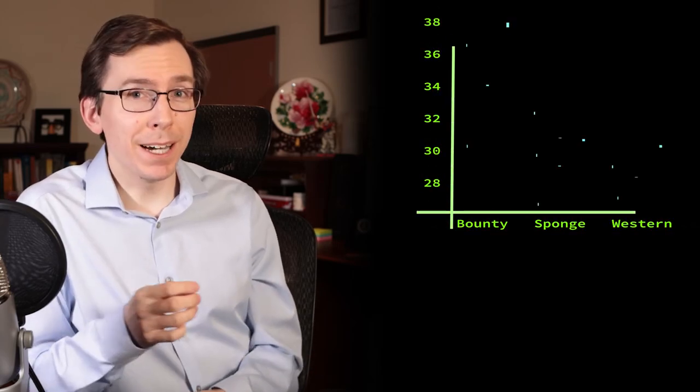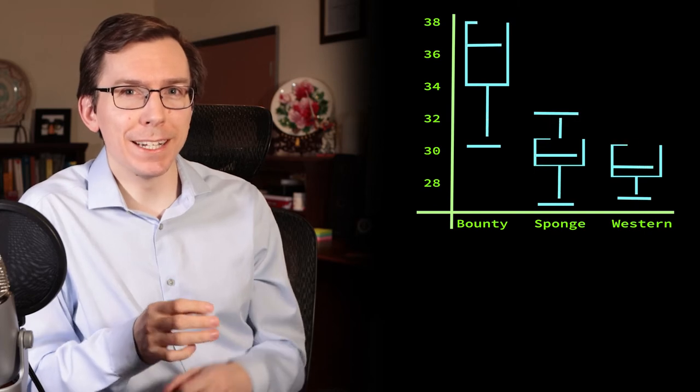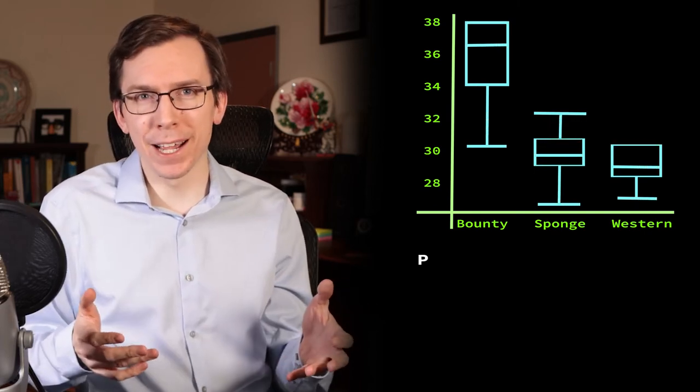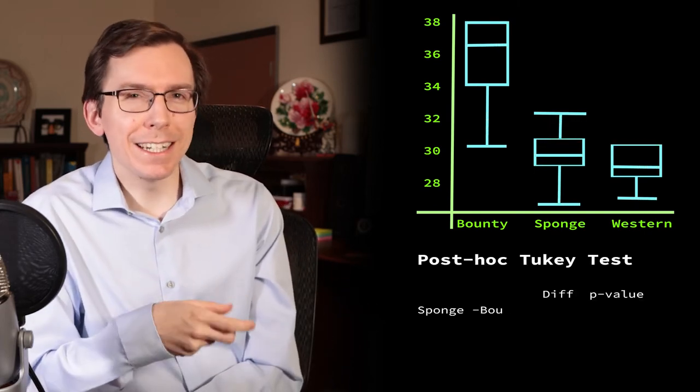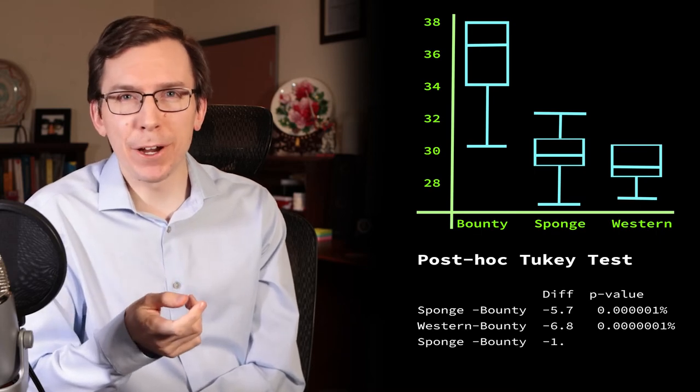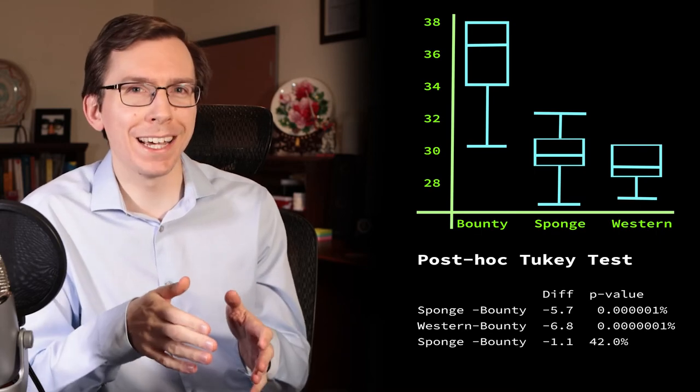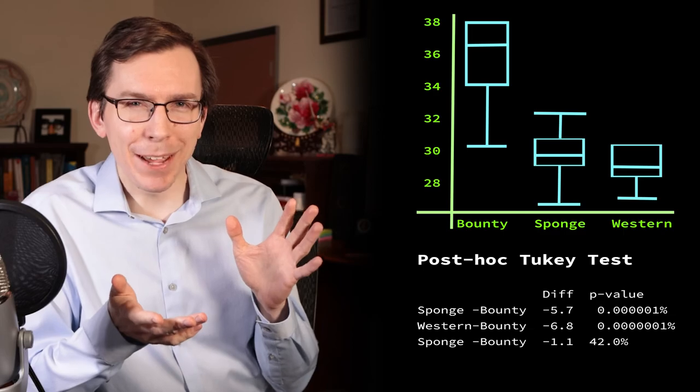The new result is now a very significant difference between Bounty and the other two brands, but no significant difference between sponge towels and Western Family brand. We could similarly devise another follow-up experiment just to test those two brands, but I'm done wasting paper towels for today. This is a simple example of designing a one-way ANOVA experiment.